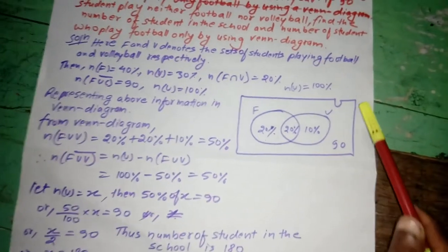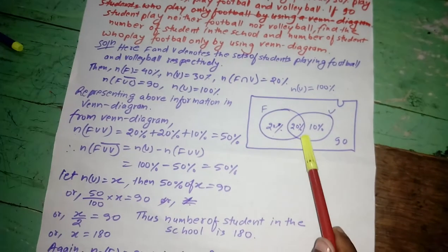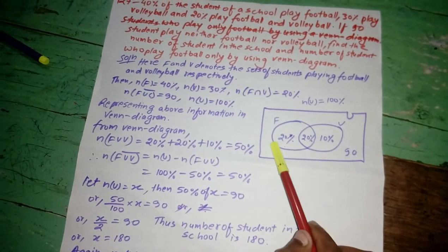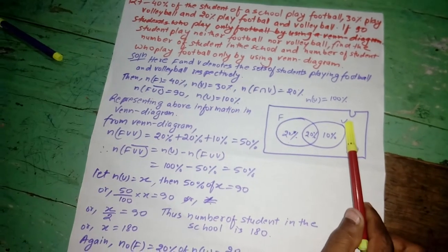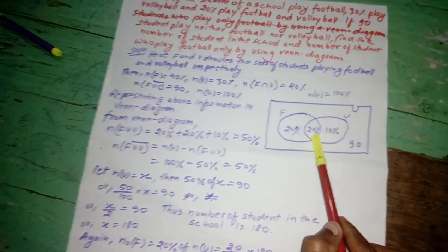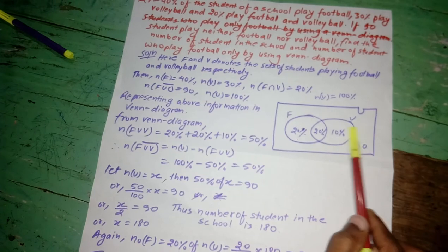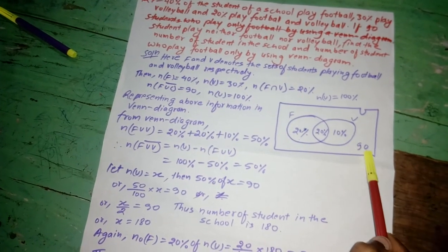This is also given in Venn diagram. Here, n(U) is equal to 100%. Here, box denotes complete sets and first circle denotes n(F) and second circle denotes n(V). Here, intersection of both sets is 20%. Here, only V is 10%, only F is 20%, and complement of F and V is 90.